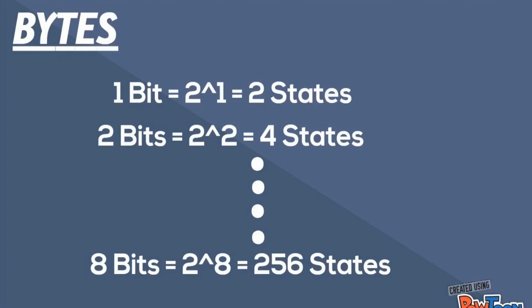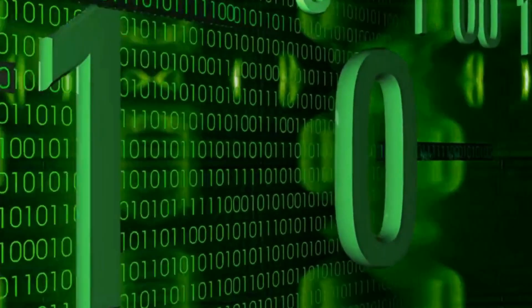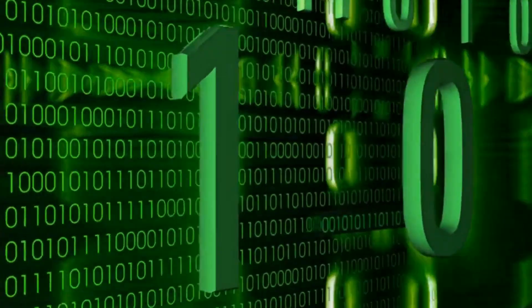For a byte, we will have to place 8 bits together and we will have 2 to the power 8 states, which totals to 256 unique combinations of information. More the number of bits or bytes, more is the power to hold information.